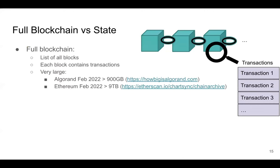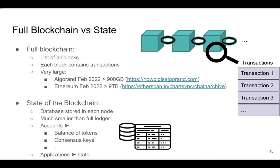So, the blockchain has two types of objects: accounts and smart contracts. Now let's look in more detail at what the blockchain state is. The blockchain is a sequence of blocks containing transactions, and the full blockchain is just the full list of blocks. It's extremely large — on Ethereum it takes more than nine terabytes, and on Algorand, a much more recent blockchain, it's already 900 gigabytes. So instead of considering the full blockchain, it's often convenient to consider the state of the blockchain.